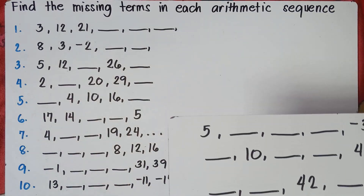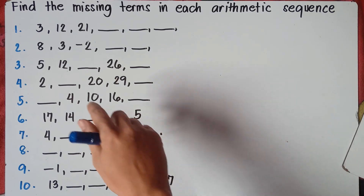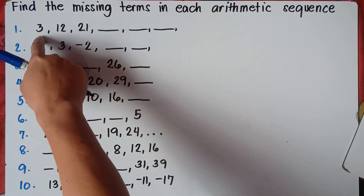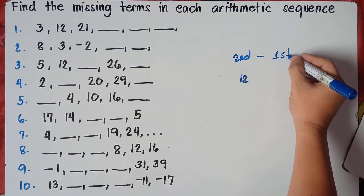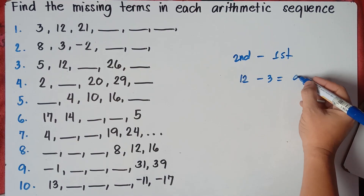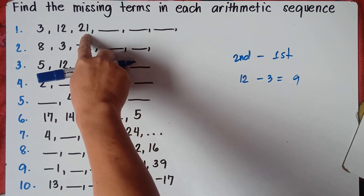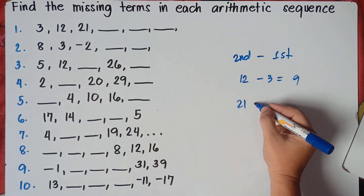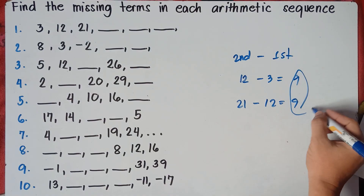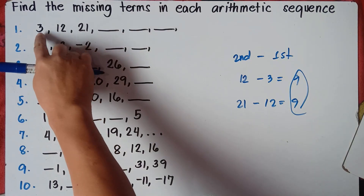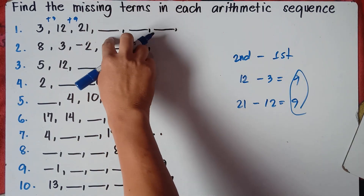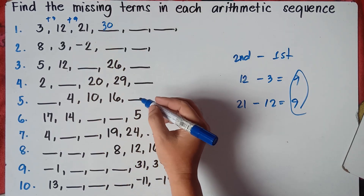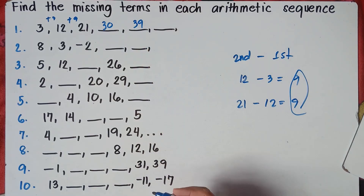Let's start with the basics, numbers 1 to 10. To get the common difference, simply subtract the second term minus the first term: 12 minus 3 equals 9. We can verify: 21 minus 12 also equals 9. So the common difference is 9. Adding 9 each time: 3, 12, 21, then 21 plus 9 is 30, 30 plus 9 is 39, and 39 plus 9 is 48. We're done with number 1.